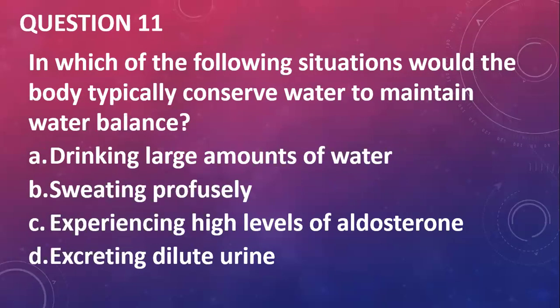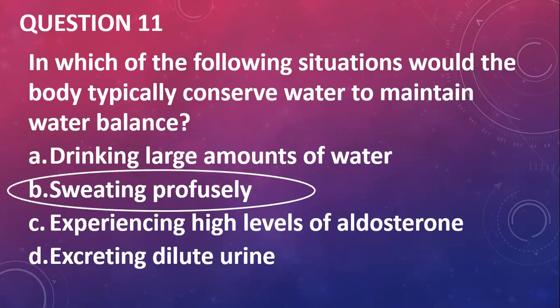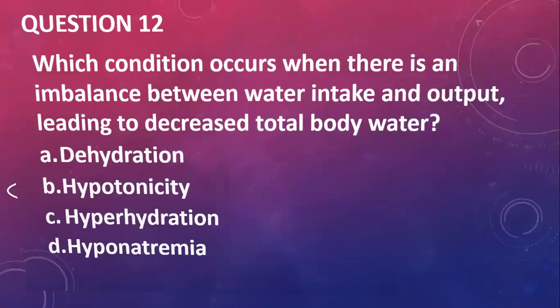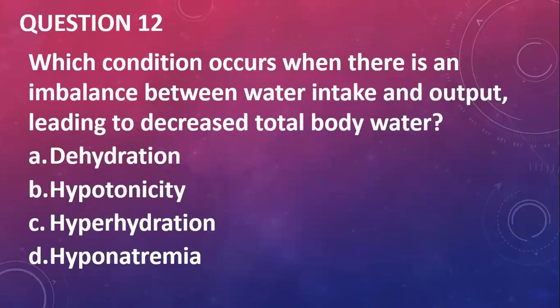Question eleven: in which situation does the body typically conserve water to maintain water balance? When you're losing water, the body will try to conserve water. The situation I'm seeing here is sweating profusely. Question twelve: which condition occurs when there's an imbalance between water intake and output, leading to decreased total body water? It is dehydration.